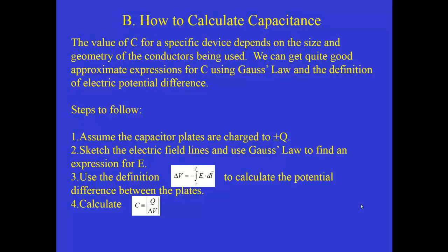So the value of the capacitance for a specific device depends on the size and shape of the conductors that are used and also if there is an insulating material between the conductors it depends on the property of that material. We can use Gauss's law to get really good approximations that lead to calculations for C that are in good agreement with experiment. We are going to use Gauss's law and then we are going to use the definition of electric potential difference. So topics that came up in chapters in the previous two chapters in our textbook are going to be of direct application right here.